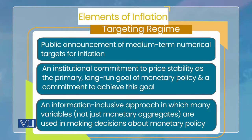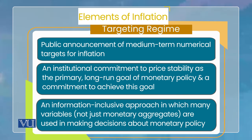جب target announce ہو جائے تو اگلا step یہ ہے کہ ایک institutional commitment چاہیے price stability کو primary goal بنانے کے لیے۔ پاکستان میں یہ institutional commitment act of parliament دیتا ہے — state bank کا جو act ہے جو national assembly سے پاس ہوا، وہ بتاتا ہے کہ پاکستان میں price stability monetary policy کا primary goal ہے۔ اگر یہ نہ ہو تو آپ inflation targeting strategy میں نہیں ہیں۔